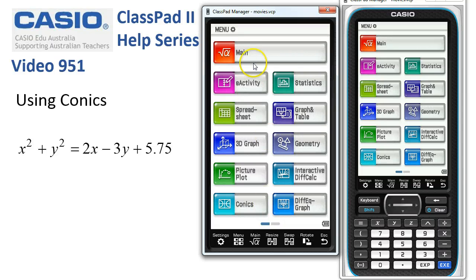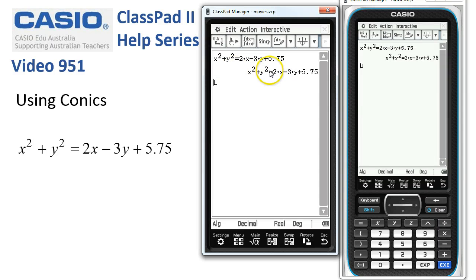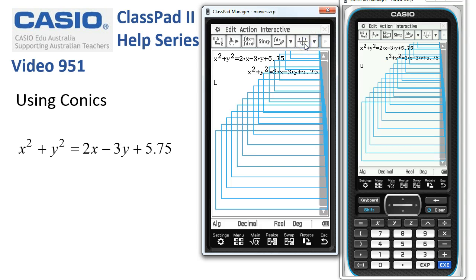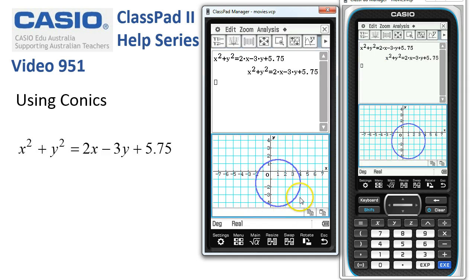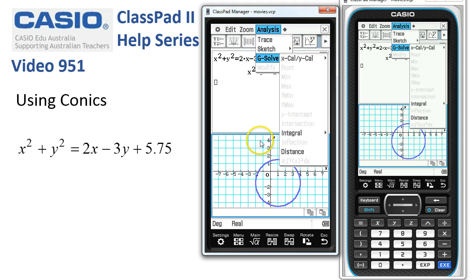Using Conics. In main we can take an implicitly defined function, open up a graph window and have a look at it. We can see it's obviously a circle, but when we go to analysis GSOB we can't find out very much about the circle at all.